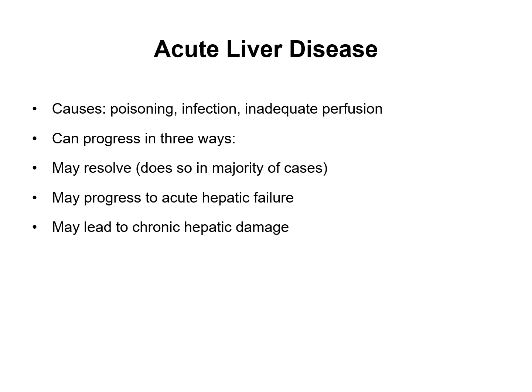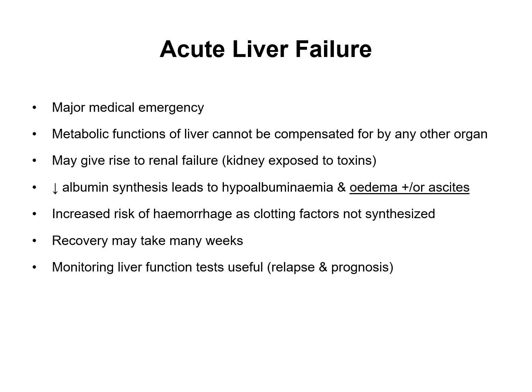Acute liver failure is a major medical emergency where the metabolic functions of the liver cannot be compensated for. It can give rise to renal failure as the kidneys are exposed to toxins. There is decreased albumin synthesis, leading to hypoalbuminaemia and oedema, as well as ascites. There is an increased risk of haemorrhage as clotting factors are not synthesized. Recovery can take many weeks, and it is useful to monitor liver function tests to assess relapse and prognosis.